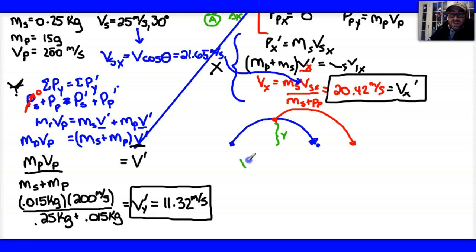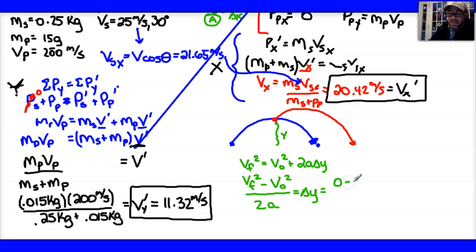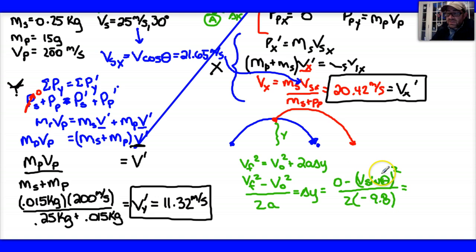Using the third kinematic equation: vf² = vo² + 2a·Δy, solving for Δy gives (vf² − vo²) / (2a). The final y-velocity is zero, and the initial y-velocity is v·sin(θ) = 25·sin(30). With acceleration of negative 9.8, I get Δy = −(25·sin30)² / (2·(−9.8)), which equals 7.97 meters. So the collision takes place about 8 meters above the ground.